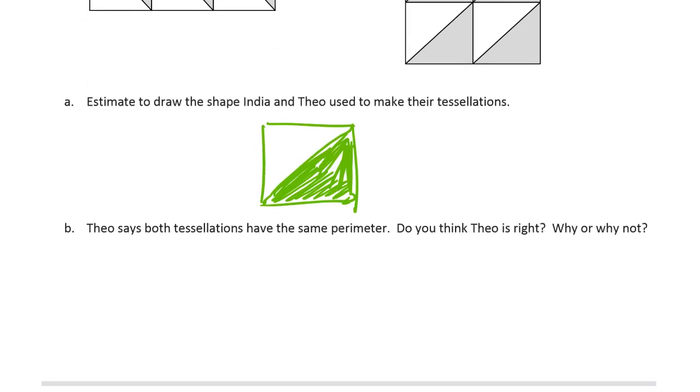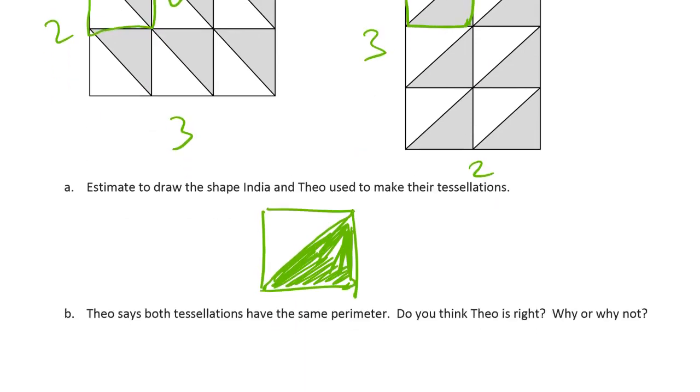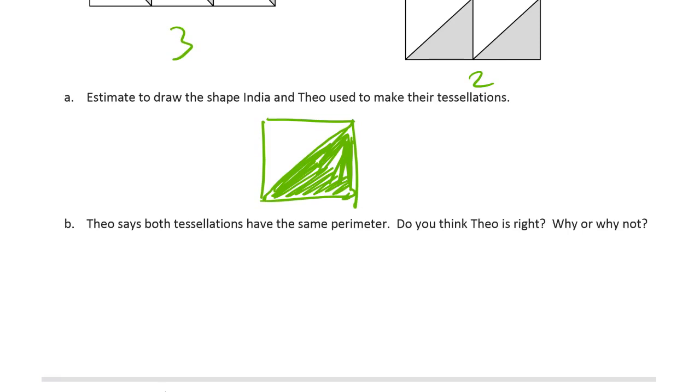Theo says both tessellations have the same perimeter. Do you think Theo is right? Why or why not? Well these are rectangles aren't they? So the perimeter. We have this one is 2 by 3 length units. And this one is 3 by 2. So I mean it's really it's the same. I could just say like an array. Theo is right. Don't forget to mention that. Because that's the question.